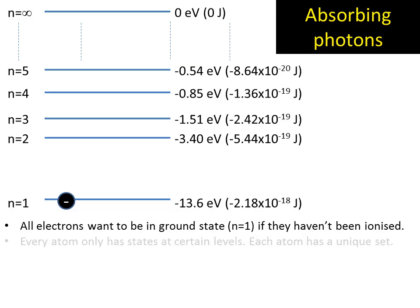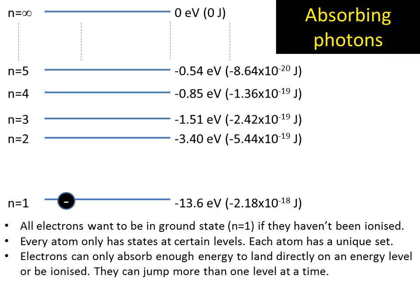Key bits: All electrons want to be in ground state. Every atom has certain states at certain levels. And each atom, every single element, every single atom has a unique set that is unique to it. Electrons have to land exactly on these steps. They can jump more than one at a time, but they have to land exactly on them. And if they get given energy that's a little bit too much or not quite enough, then they simply ignore that photon totally and it passes them by.